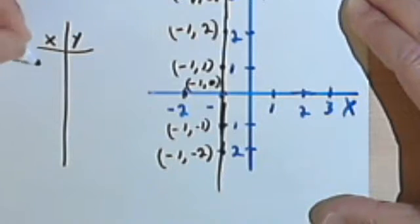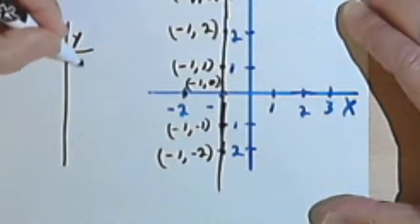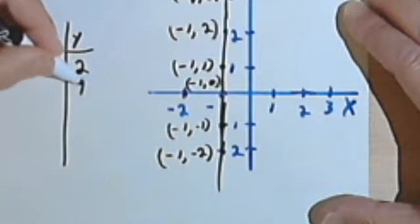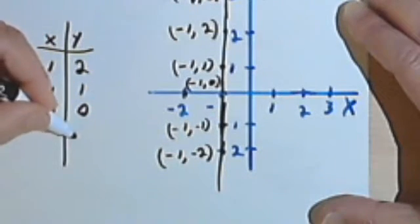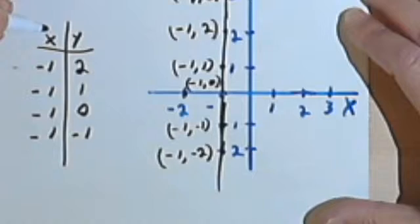For a table of values, let's work it backwards. When y is 2, x is negative 1. When y is 1, x is negative 1. When y is 0, x is negative 1. As you can see, x is always negative 1.